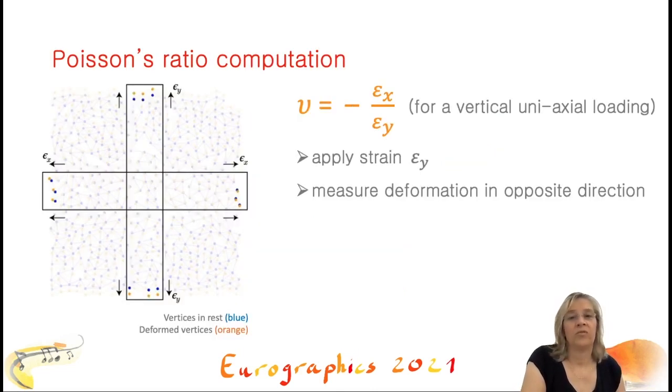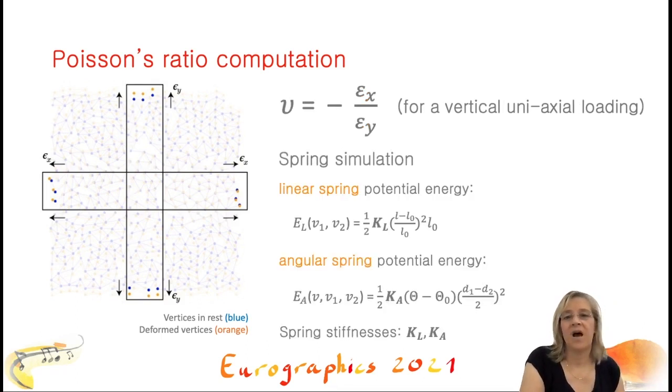Once our network has been produced, we need to compute its Poisson's ratio. We therefore set up a physical simulation in order to apply a given loading, let the network deform under this loading, measure the resulting deformations, and compute the Poisson's ratio from these measurements. This is the only part where we use a physics-based simulation. Our simulation is based on a spring-mass system which minimizes the sum of the potential energies shown here. The system involves both linear and angular springs. Note that the stiffnesses KL and KA of the linear and angular springs must be chosen carefully. We will come to this choice later in the talk.